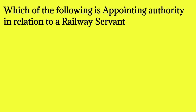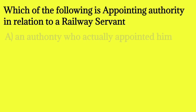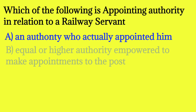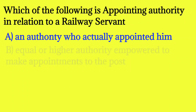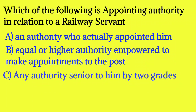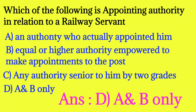Which of the following is the appointing authority in relation to a railway servant? Option A: an authority who actually appointed him. Option B: an equal or higher authority empowered to make an appointment to the post. Option C: any authority senior to him by two grades. Option D: A and B only. The answer is A and B only.